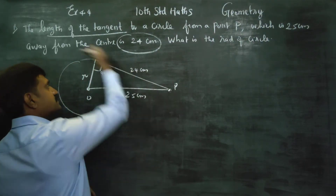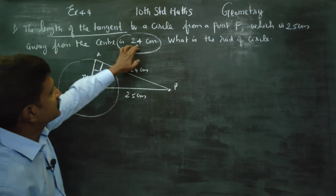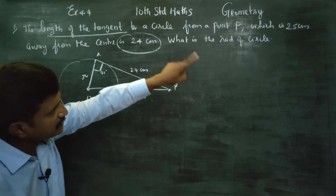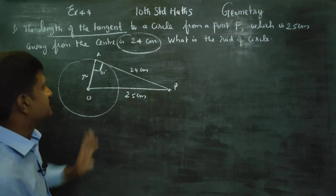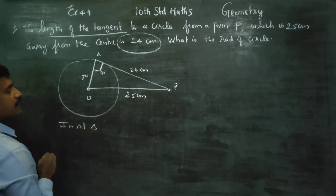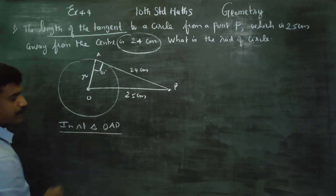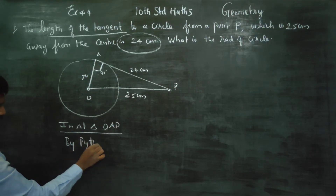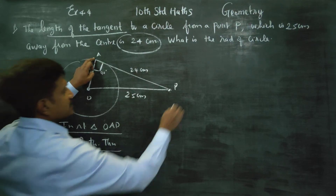The length of the tangent is 24, from point P. P is at a distance of 25 centimetres from the centre. In right triangle OAP, by Pythagoras theorem: